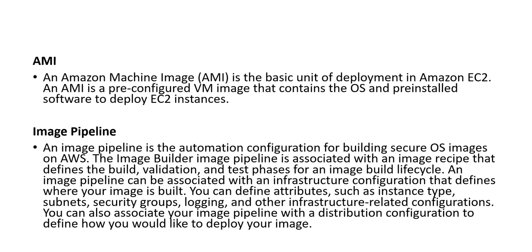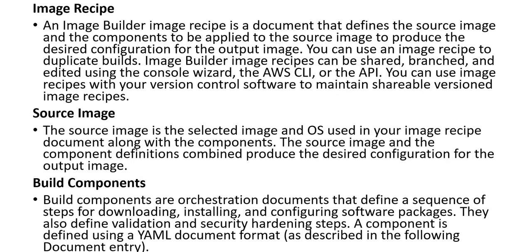We can also associate the image pipeline with the distribution configuration to define how we would like to deploy our image. Image Recipe — an Image Builder recipe is a document that defines the source image and the components to be applied to the source image to produce the desired configuration. We can use an image recipe to duplicate builds. Image Builder image recipes can be shared, branched, and edited using the console, CLI, or API. We can use image recipes with version control software to maintain shareable versioned image recipes.